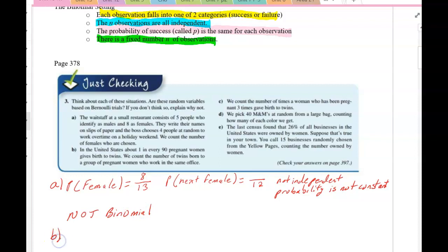Let's take a look at the letter B. In the United States, about one in every 90 pregnant women gives birth to twins. We count the number of twins born to a group of pregnant women who work in the same office. So there are two categories. They either give birth to twins or not.